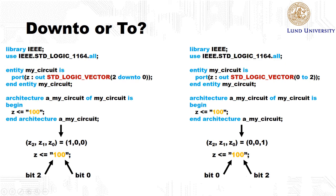I would say that the keyword down to is the most commonly used in VHDL. Probably this is due to that this is more like the way we write binary numbers on paper, where we have the most significant bit to the left.